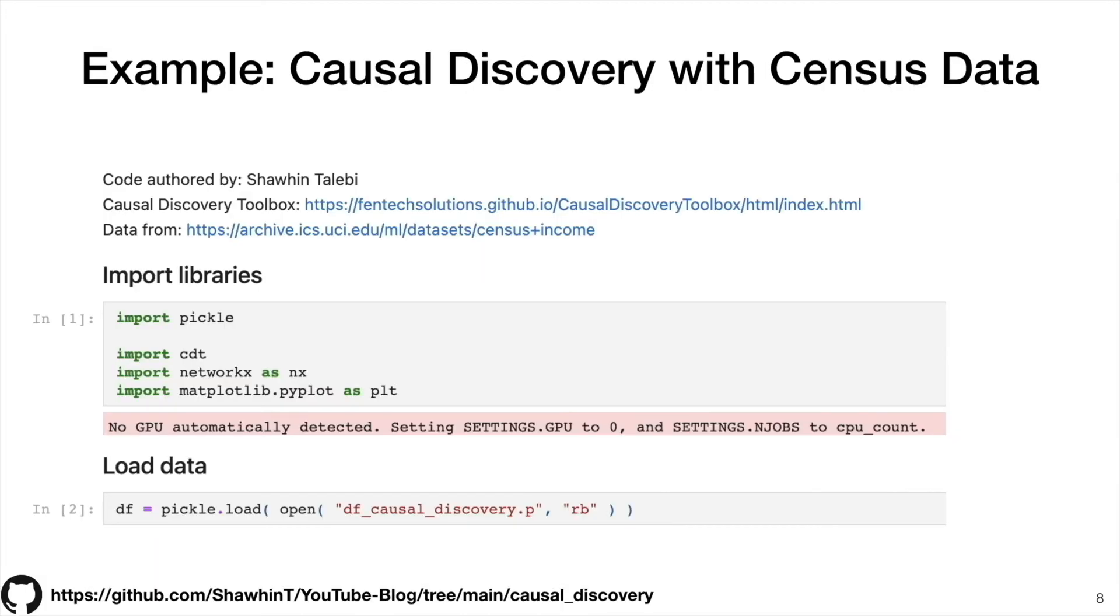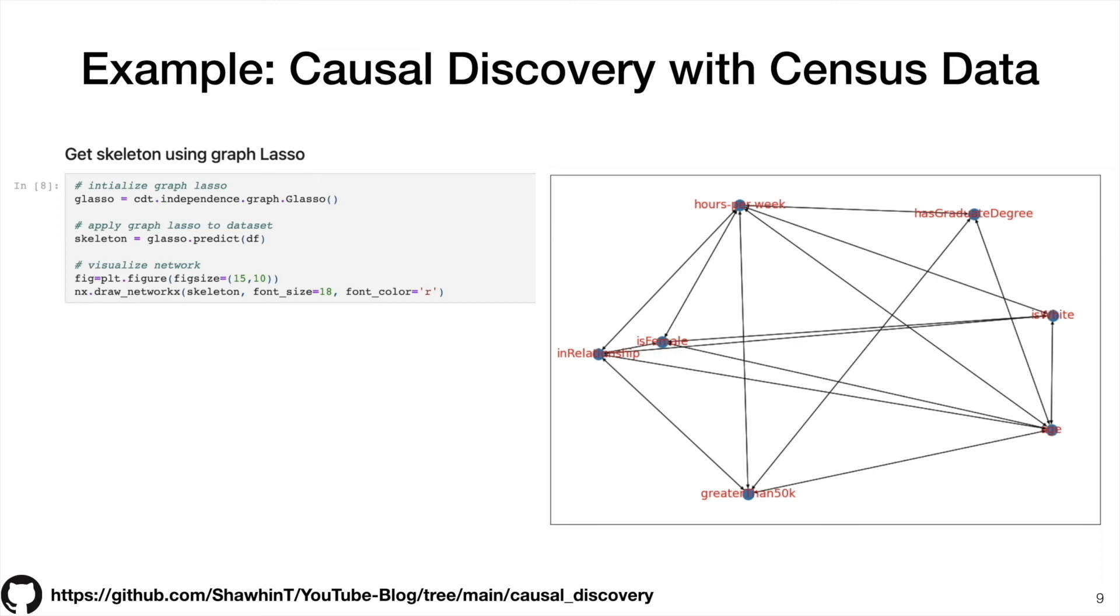Okay, so I will conclude with a concrete example like in the previous video. So we're going to be using the same census data set as before. But instead of having just three variables of age, education, and wealth, we're going to include more variables. And instead of using the Microsoft DUI library for causal inference, we're going to be using the causal discovery toolbox. So again, first step is importing libraries, loading data, then for a lot of these causal discovery algorithms, it helps to start with a so called graph skeleton. So this is like step two that we saw with the PC algorithm where we do the pairwise independence testing, and we have undirected edges between variables that are statistically dependent. And then you can visualize the network pretty easily using network x.